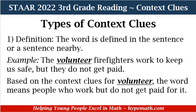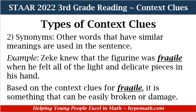Synonyms are other words that have similar meanings and are used in the sentence. An example is: 'Zeke knew that the figurine was fragile when he felt all of the light and delicate pieces in his hand.' Based on the context clues for fragile, it is something that can be easily broken or damaged. The synonyms in this sentence are 'light' and 'delicate,' which are synonyms for fragile.